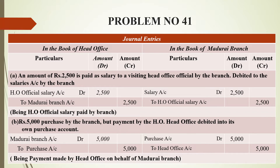The first entry: an amount of rupees 2,500 is paid as salary to a visiting head office official by the branch, debited to the salaries account by the branch. This salary is paid by the branch, possibly for inspection or some other reason.